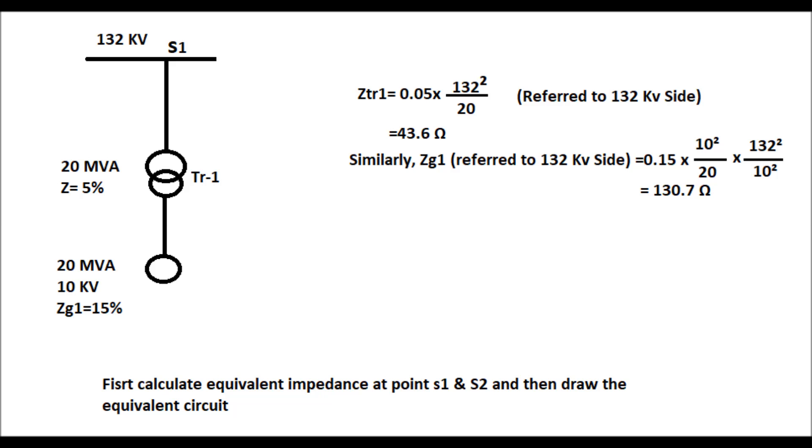Similarly, ZG1 that is referred to 132 kV side will be equal to 0.15 times 10 squared by 20 times 132 squared by 10 squared. That will come to 130.7 ohm.